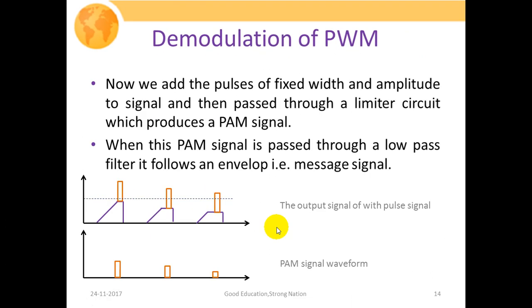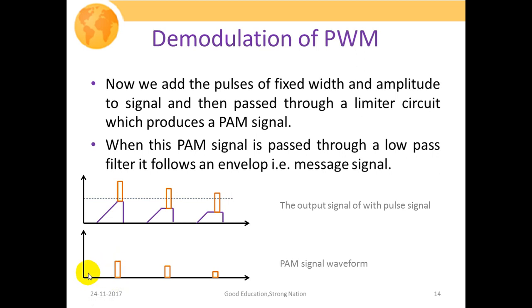We then add pulses of fixed width and amplitude to the signal and pass it through a limiter circuit, which produces the PAM signal. The limiter circuit clips or subtracts a fixed amount from the incoming signal, leaving only the variable-height portions. The resulting signal is a pulse amplitude modulated waveform. From this PAM signal, we can easily recover the analog signal by passing it through a low-pass filter, as studied in our last lecture.